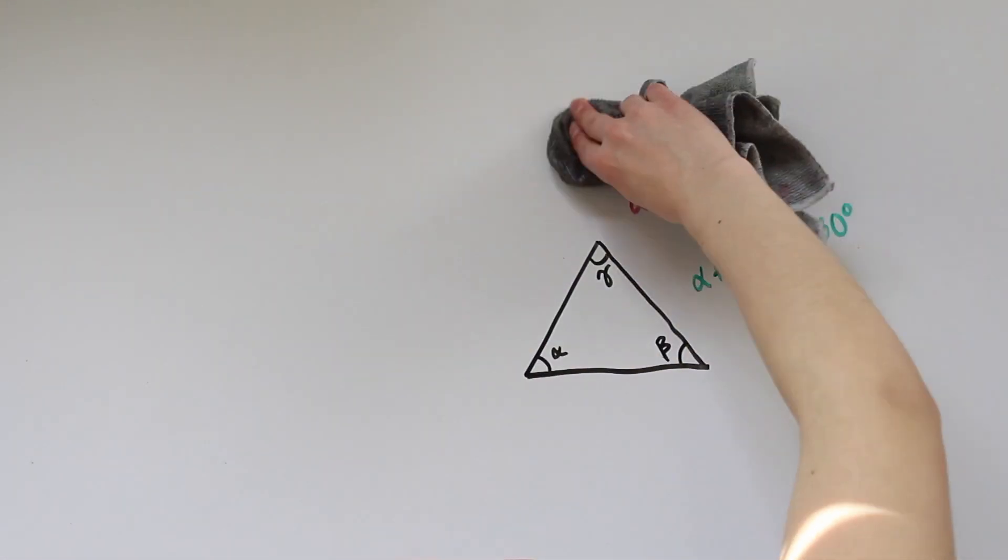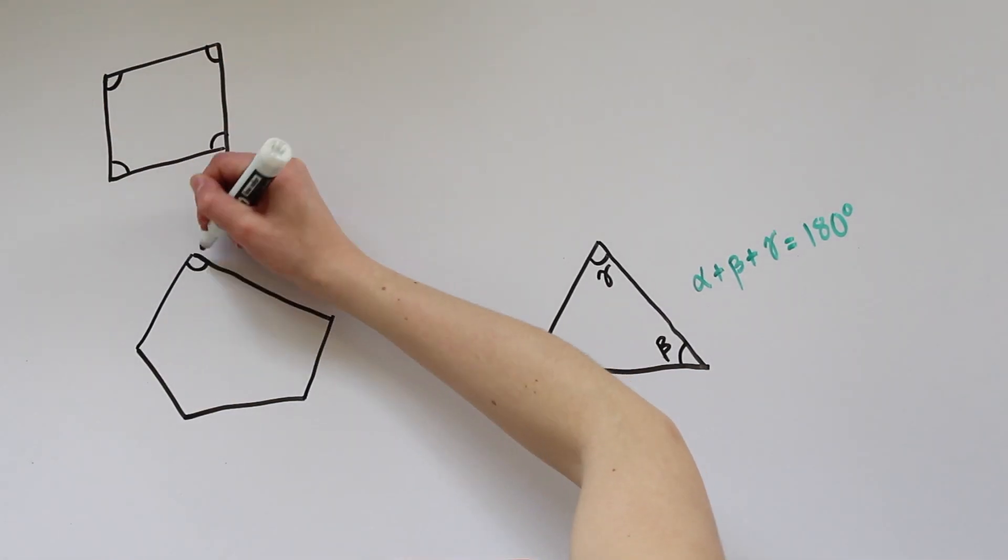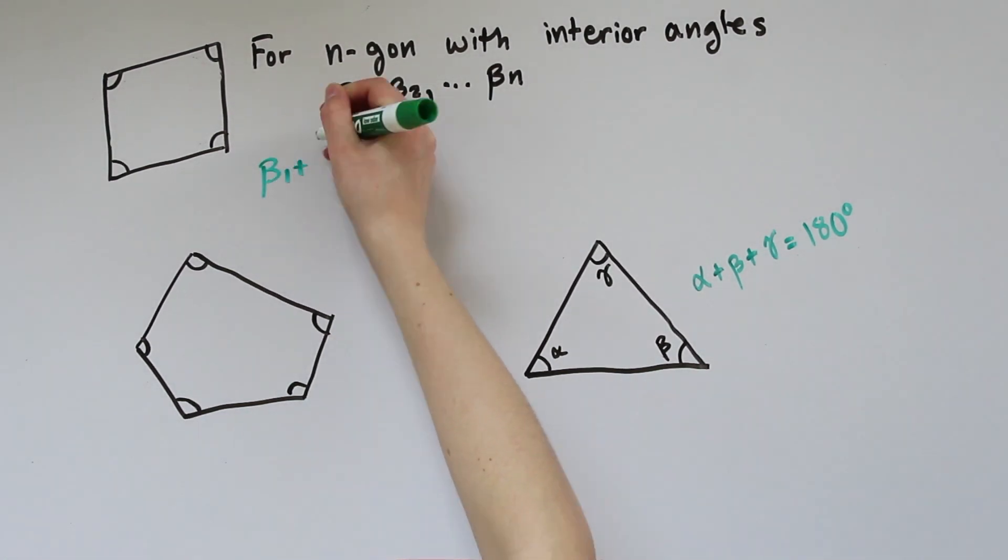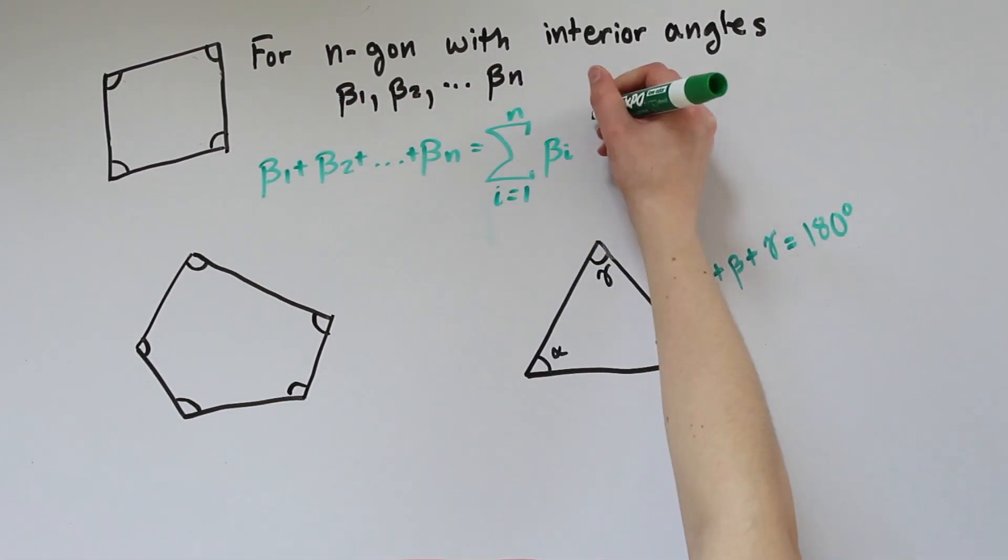You may also remember a more general fact for any polygon. For any n-gon, a polygon with n sides, the sum of its interior angles is 180 times n minus 2.